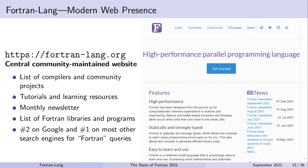Fortran-lang.org is intended to be a central community-maintained website for Fortran. It is open source on GitHub and anyone can suggest or contribute to its content. The website currently has a list of Fortran compilers with information about them, tutorials for getting started with Fortran, lists of learning resources, and a monthly newsletter detailing activity in Fortran-lang and the wider Fortran community. We also have a package index listing all the various Fortran libraries and programs we're aware of, categorized by domain area. Fortran-lang.org is now within the top one or two results on most search engines when you search for Fortran.